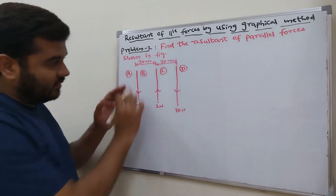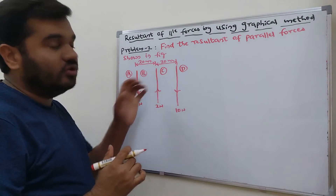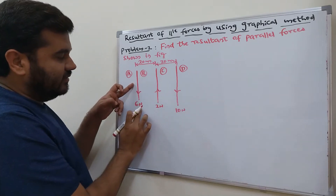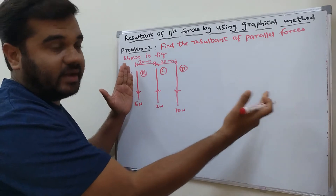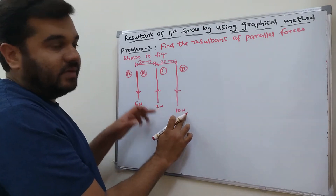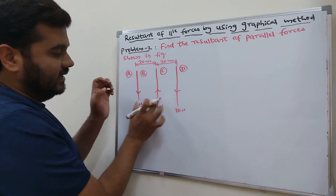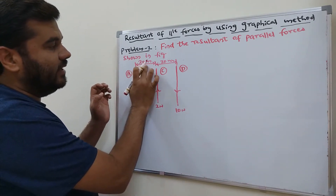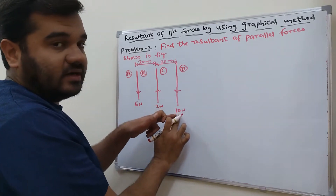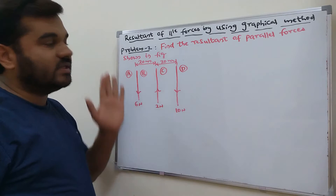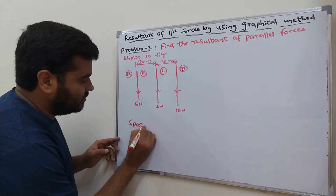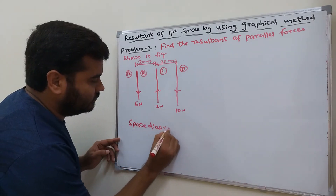After giving notation, draw the space diagram. Draw the three parallel lines representing 6 Newton, 2 Newton, and 10 Newton, maintaining the given distances — 20 millimeters between the first and second force and 30 millimeters between the second and third. You can use a convenient scale. This diagram is called the space diagram.